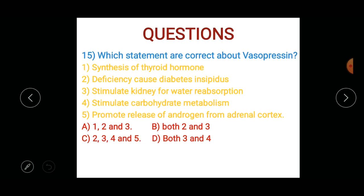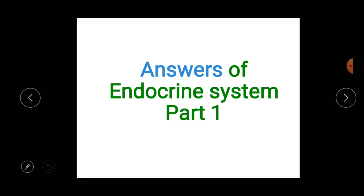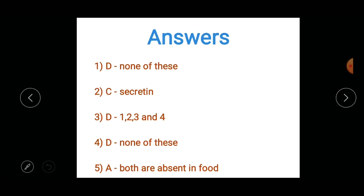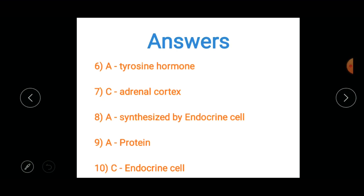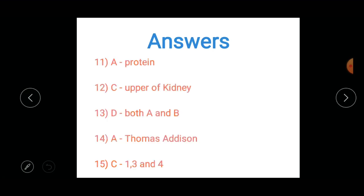These were the part 2 questions. Now the answers of endocrine system part 1: 1st - D (none of these), 2nd - C (secretin), 3rd - D (one two three and four), 4th - B (none of these), 5th - A (both are absent in food), 6th - A (tyrosine hormone), 7th - C (adrenal cortex), 8th - A (synthesized by endocrine cell), 9th - A (protein), 10th - C (endocrine cell), 11th - A (protein), 12th - C (upper of kidney), 13th - D (both A and B), 14th - A (Thomas addition), 15th - C (one three and four).